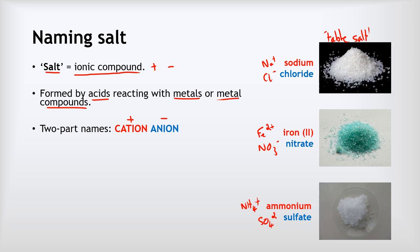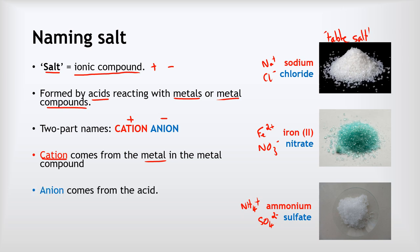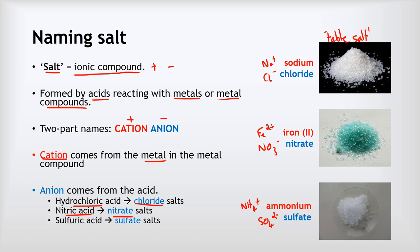The cation name comes from the metal in the metal compound, and the anion name comes from the acid. So, for example, if we had hydrochloric acid we would make a chloride salt. If we had nitric acid, we'd make a nitrate salt. And if we had sulfuric acid, that would make a sulfate salt.